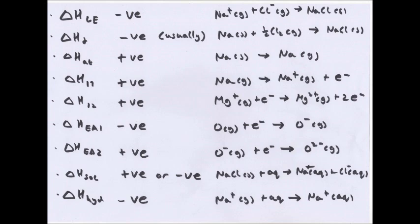Now the enthalpy signs: lattice enthalpy is always exothermic. Formation is usually exothermic, but it can be endothermic. Atomization is always endothermic. Both ionization energies are always endothermic. The first electron affinity is always exothermic; the second is always endothermic. Solution can be either, and hydration must be negative and exothermic.